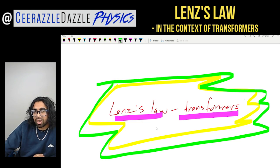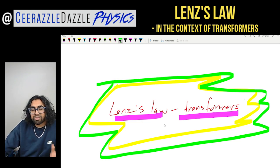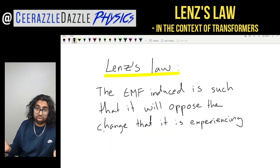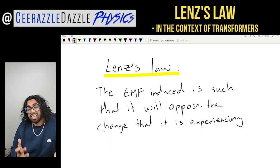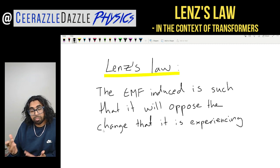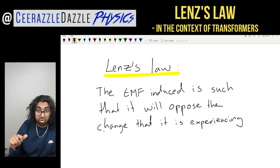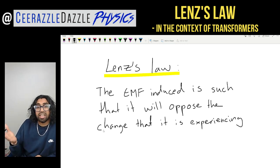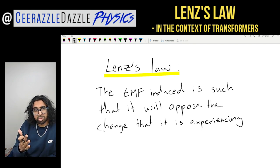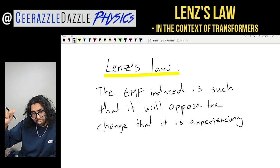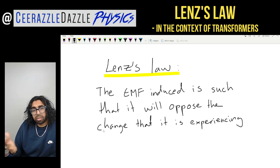So, Lenz's Law in the context of transformers. Let's have a quick recap on what Lenz's Law actually is. Lenz's Law states that the EMF induced is such that it will oppose the change it is experiencing — this may mean it creates a magnetic field to oppose the change, or it creates a force to oppose the change. In the previous video we looked at two examples: moving a bar magnet into a coil, or dragging a wire within a field.